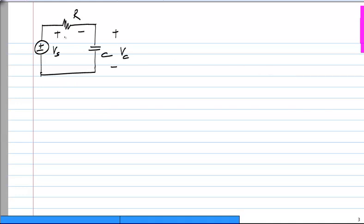Let us identify different possible variables. I have marked Vc the capacitor voltage, Ic the capacitor current, and Vr the voltage across the resistor. We have already seen that we can write the differential equation for the circuit in terms of any of these variables.